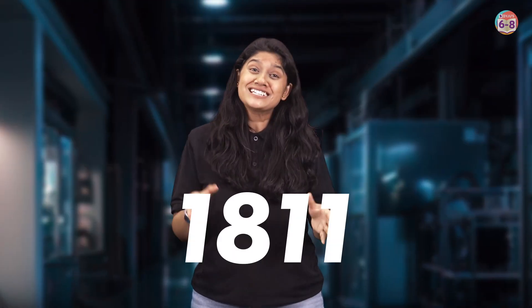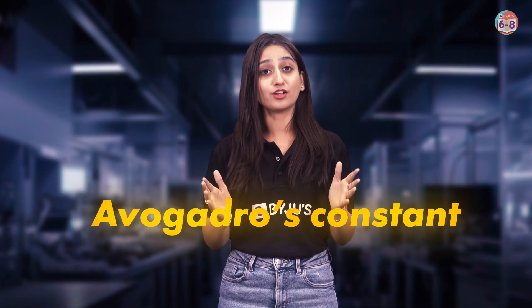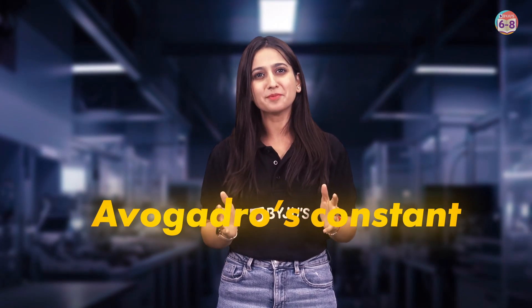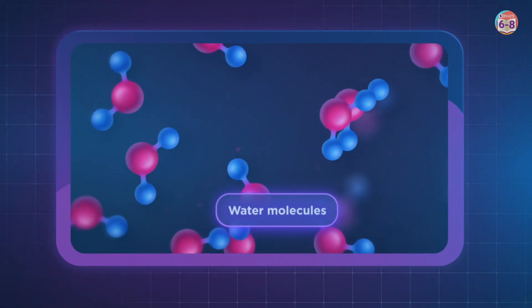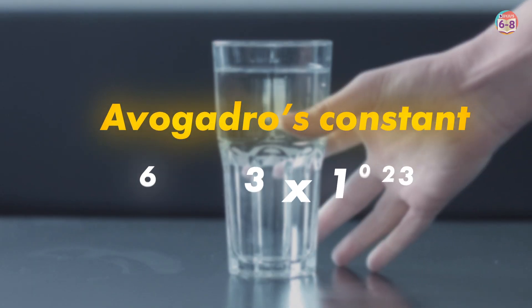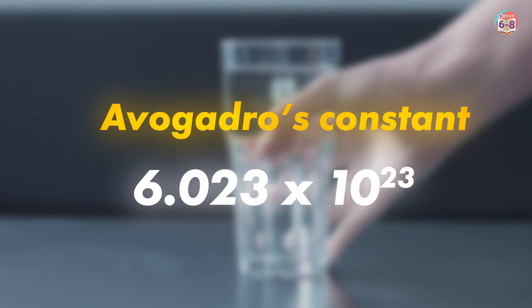A very random fact — in 1811, the Italian physician Emidio Avogadro found the H2O formula for water. It's not that random. Avogadro's constant: a number that can help find how many molecules of water are there in that glass of water — 6.023 into 10 to the power 23.